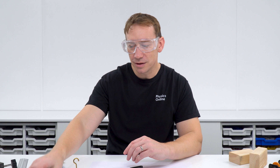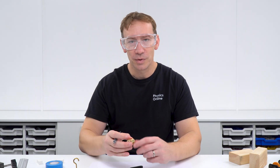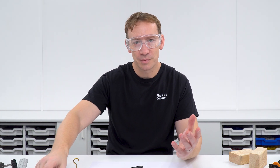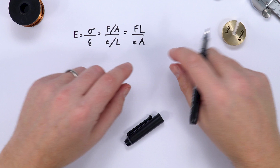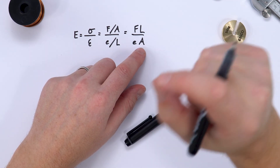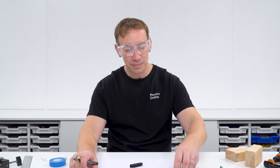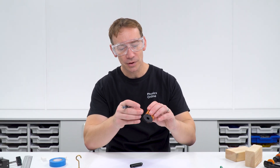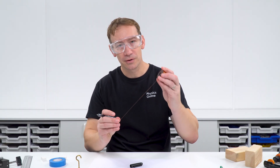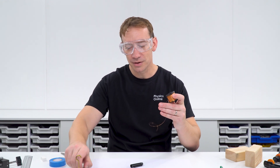We can measure the force because that's equal to the weight applied to a piece of wire. We can measure the original length of that piece of wire. The extension can be measured, but the area is a little more tricky — we don't measure the area directly.